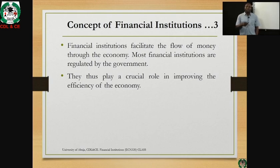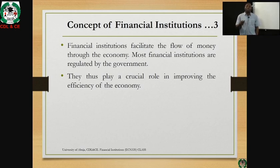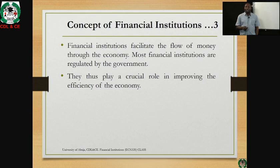Financial institutions facilitate the flow of money through the economy. Through them, for example, the CBN's monetary policy can be transmitted and implemented. That is one of the critical roles of the financial system. The financial institutions roll out and implement CBN policy, which is why the Central Bank has a bank supervision department that goes around to see that CBN policies are being implemented. Most financial institutions are regulated by the government — in Nigeria's case, by the CBN and other agencies — and they play a critical role in improving the efficiency of the economy.